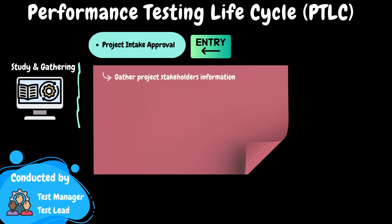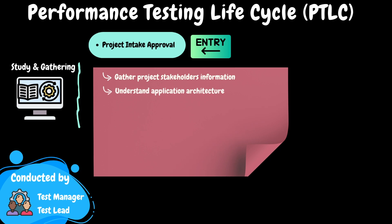For instance, if we require clarification on a particular business scenario, having a designated point of contact within the business team allows us to promptly schedule a meeting and address the details. It is equally important to gain a comprehensive understanding of the application architecture, its components, and the involved technology stack. This is very important for any performance tester before starting their performance testing activities. I have covered these concepts extensively in module number 3 of the series.